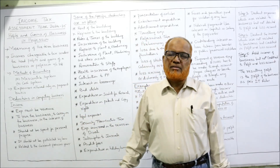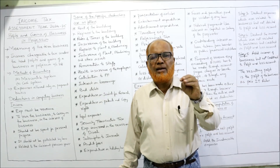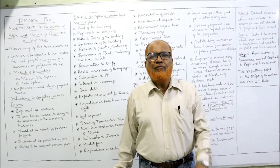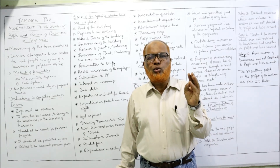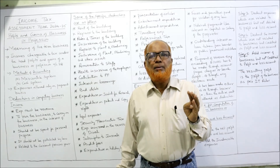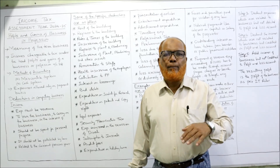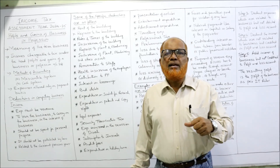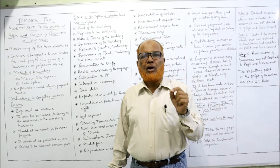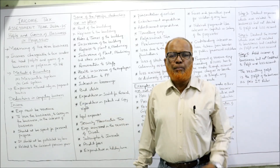Expenses allowed only on a payment basis: the Income Tax Act has given five specific cases where deduction is allowed only when payment is actually made. If payment is not made, no deduction will be allowed — outstanding amounts are not allowed. The five cases are: any tax due to the government, employer's contribution to employees' fund, bonus payable to workers, interest payable to a bank or financial institution on a loan, and any cess payable to the government. I will repeat all these points again while doing the problems.